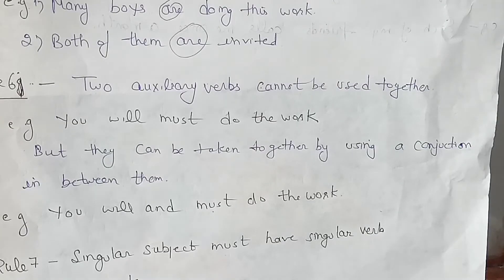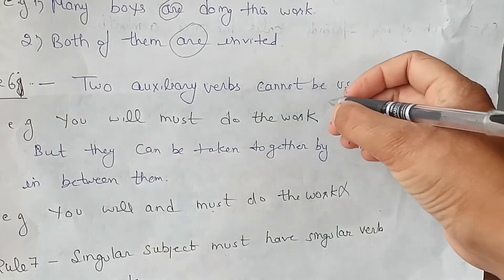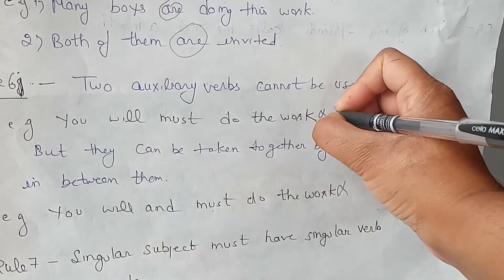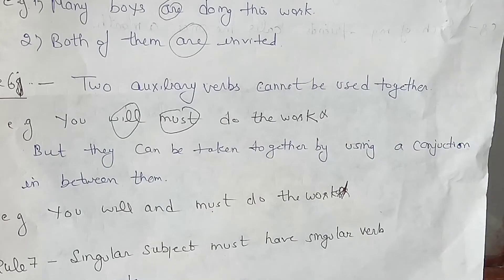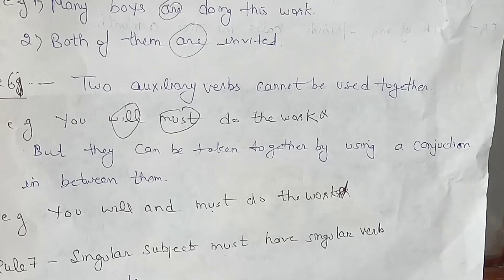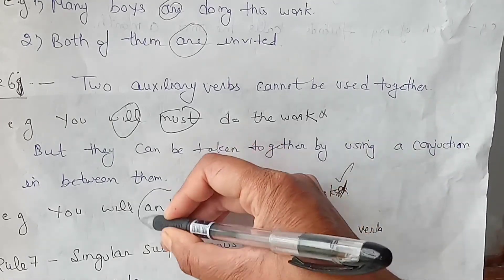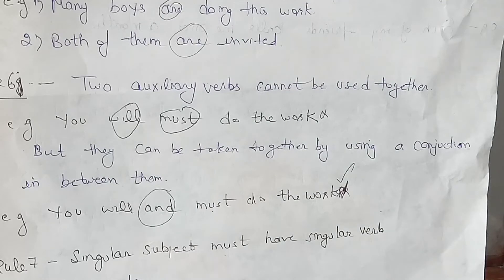Rule number six: two auxiliary verbs cannot be used together. For example, 'You will must do the work' is a wrong sentence because 'will' and 'must' are both auxiliary verbs and cannot be placed together. However, they can be joined by using a conjunction between them. The correct form is: 'You will and must do the work.' When auxiliary verbs are written with a conjunction, they can appear together.